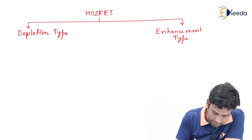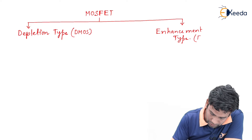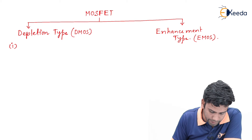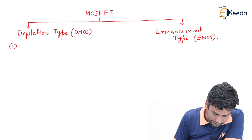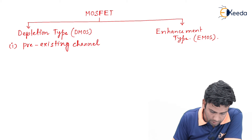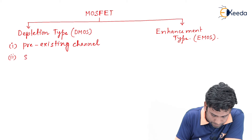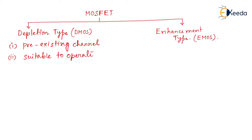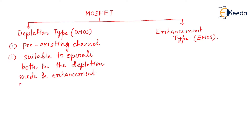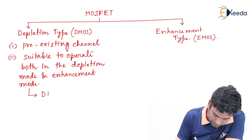The depletion type MOSFET is denoted by D-MOS and the enhancement type MOSFET is denoted by E-MOS. The first property of a depletion type MOSFET is that a pre-existing channel always exists. The second property is that it is suitable to operate both in the depletion mode and enhancement mode. That is why this depletion type MOSFET is also termed as DE MOSFET.